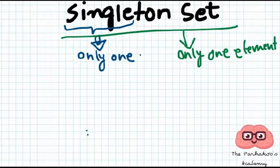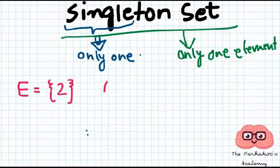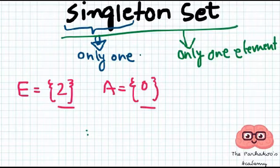Now let's see with examples. Let's say E equals to 2, A equals to 3. These are examples of singleton sets because they have got only one element in it.